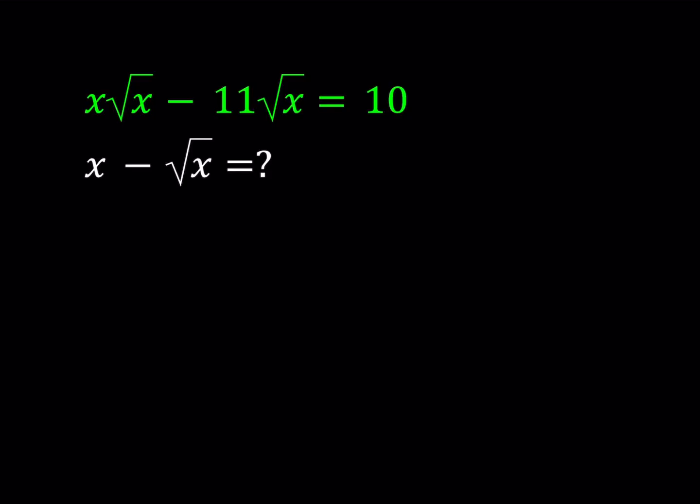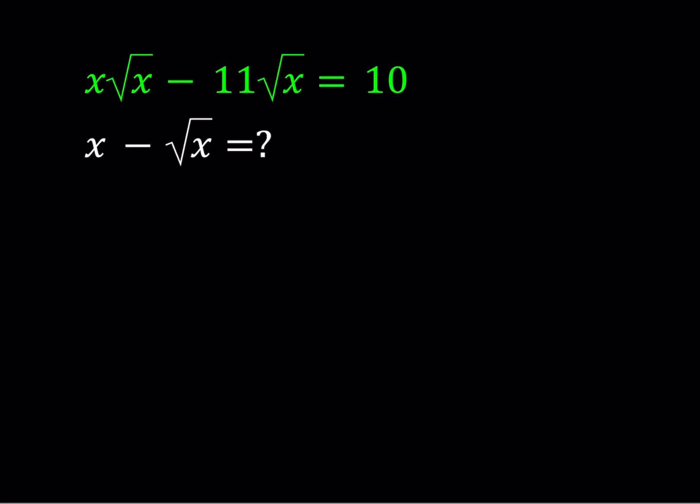Hello everyone. In this video we're going to be evaluating a radical expression. We are given x times square root of x minus 11 times square root of x equals 10, and we're going to evaluate x minus square root of x numerically. I'll be presenting two methods. Let's start with the first method.